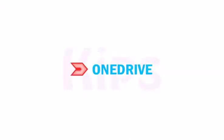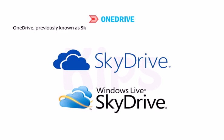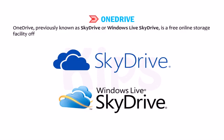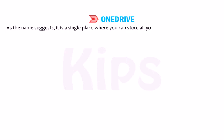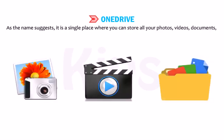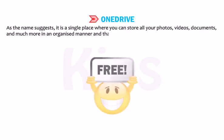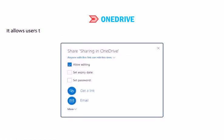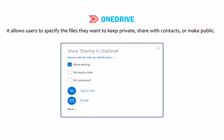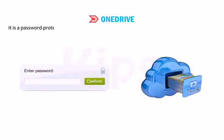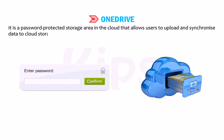Let's talk about OneDrive. OneDrive, previously known as SkyDrive or Windows Live SkyDrive, is a free online storage facility offered by Microsoft. It is a single place where you can store all your photos, videos, documents and much more in an organized manner, free of cost. It allows users to specify the files they want to keep private, share with contacts, or make public. It is a password-protected storage area in the cloud that allows users to upload and synchronize data to cloud storage and then access it from the web browser anytime.